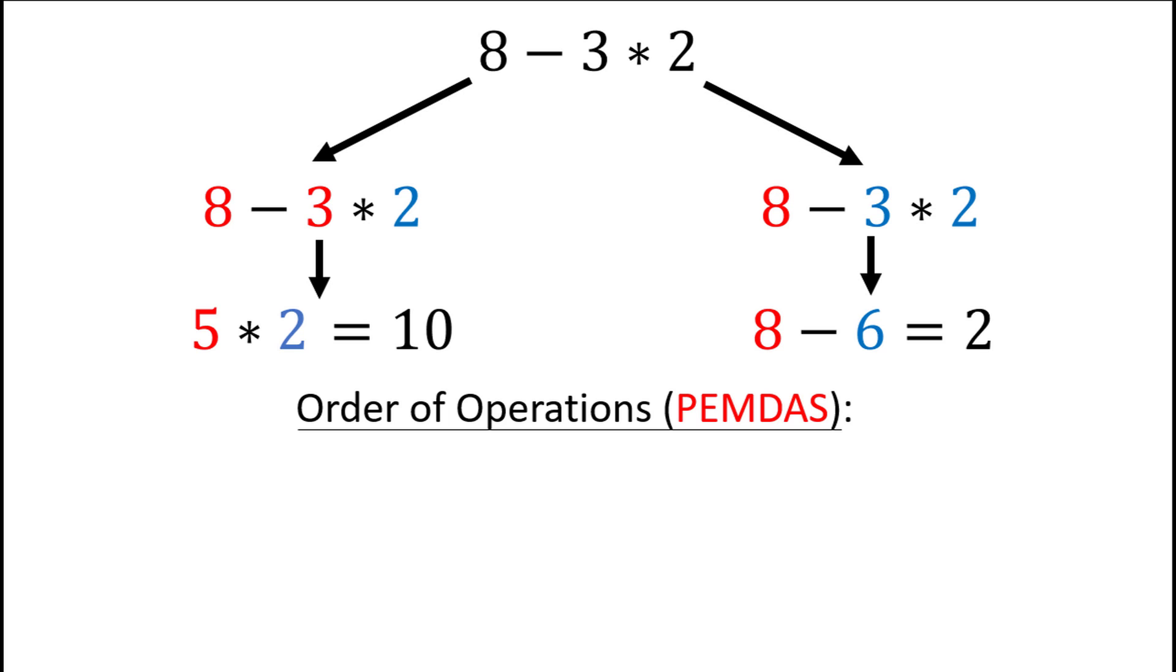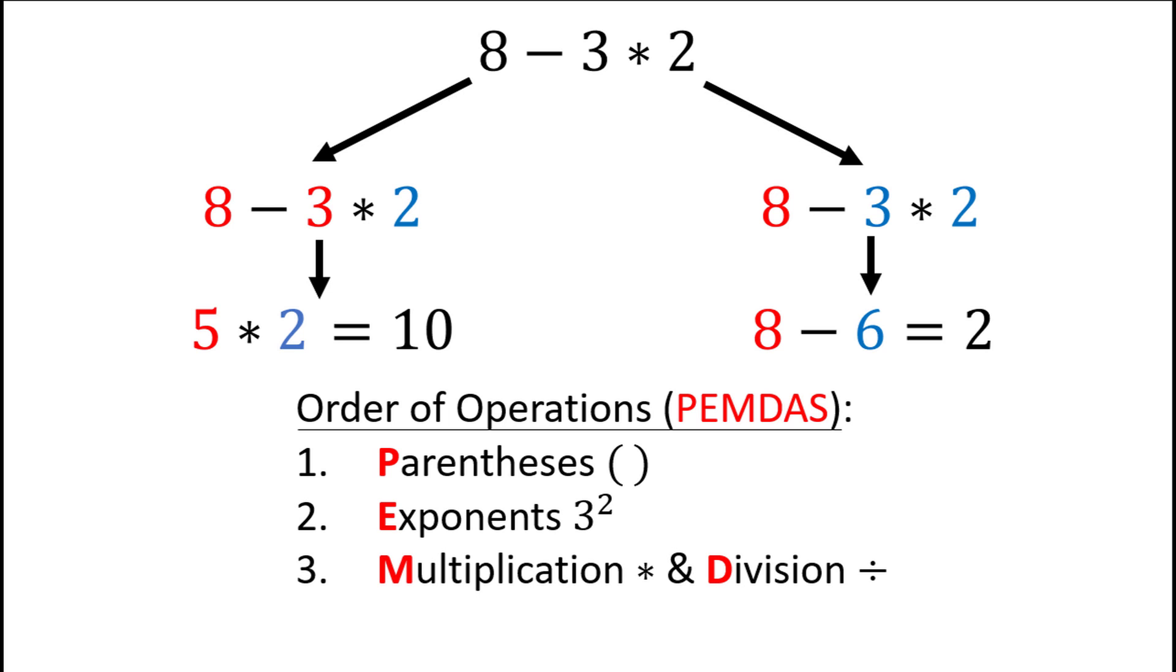The order of operations tells us to simplify an expression in the following order. First, take care of anything inside parentheses, then deal with any exponents, then do both multiplication and division. Those two are kind of on the same level and should be evaluated from left to right. And then do both addition and subtraction. These two should also be evaluated from left to right in your problem. This creates the familiar acronym PEMDAS to help you remember the order of operations.